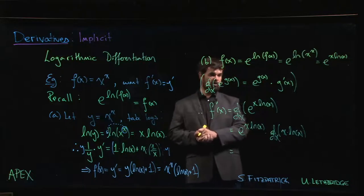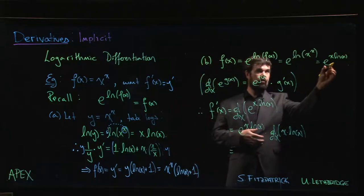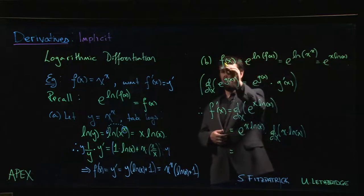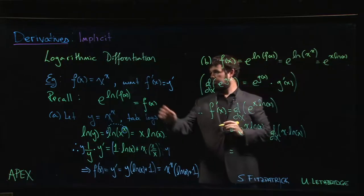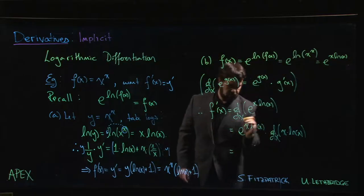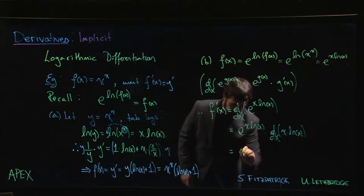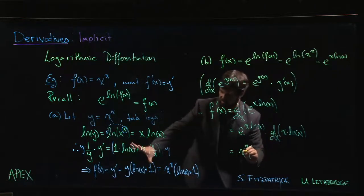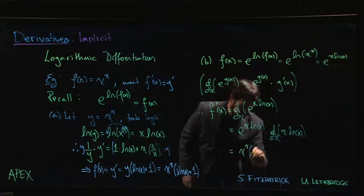But while we're at it we can also do one simplification, because remember this e to the x log x was really f of x, and f of x is x to the power of x. So this whole thing can become x to the power of x, then we take the derivative.